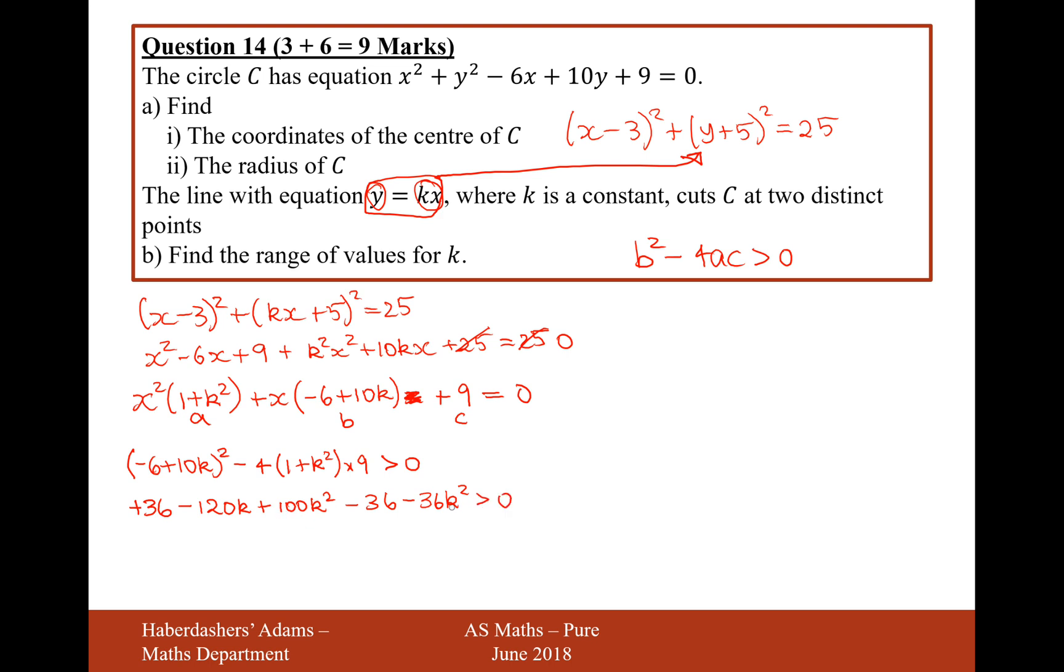Let's now simplify this together. 100 minus 36 is 64k squared minus 120k. And then we've got 36 and minus 36, so those two things will cancel each other out. The next thing I'm going to do is divide by 8 because you can do that on this. I'm not going to divide by k because that will get rid of one of my solutions. But I can divide by a number. It's going to be 8k squared minus 15k is greater than 0.